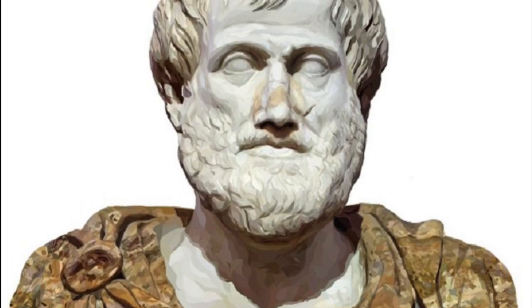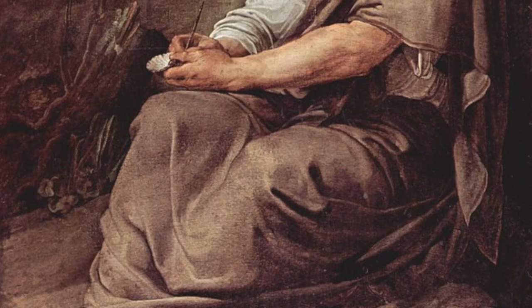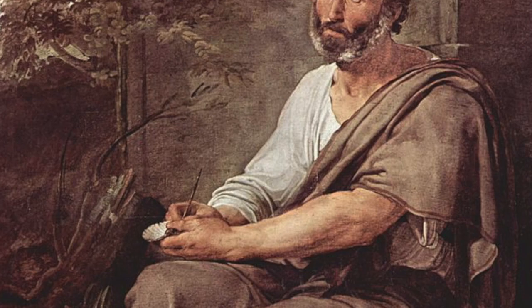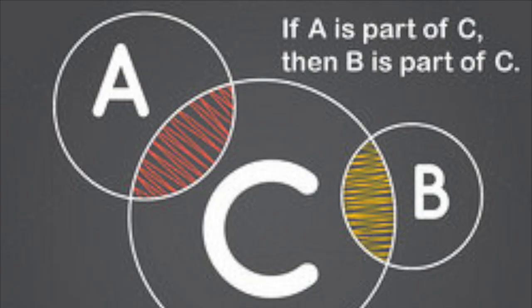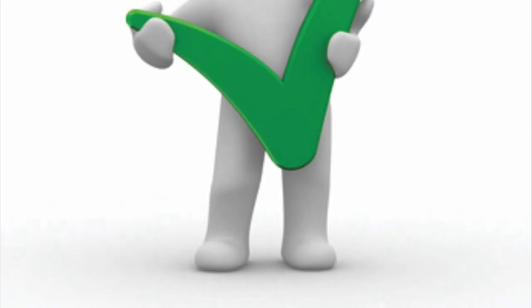Thinking Rationally: The Laws of Thought Approach. The Greek philosopher Aristotle was one of the first to attempt to codify right thinking — that is, irrefutable reasoning processes. His syllogisms provided patterns for argument structures that always yielded correct conclusions when given correct premises.